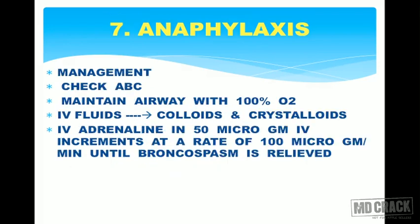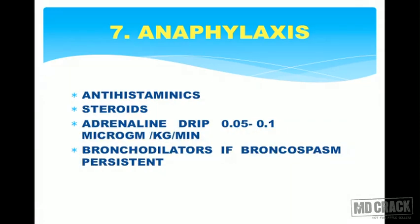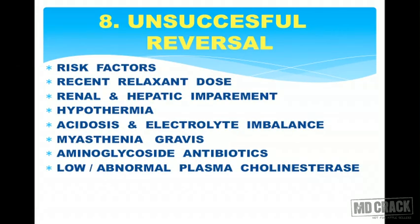Management of anaphylaxis: maintain airway with 100 percent oxygen. Give IV fluids — crystalloids and colloids — rapidly. Give IV adrenaline in 50 microgram increments at a rate of 100 microgram per minute until bronchospasm is relieved. Use antihistamines and steroids liberally. Start an adrenaline drip at 0.05 to 0.1 microgram per kg per minute. If bronchospasm persists, use bronchodilators.